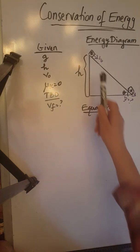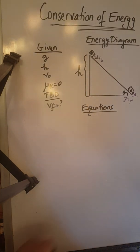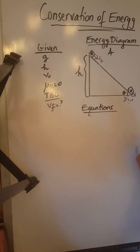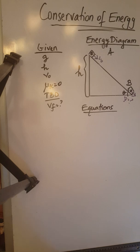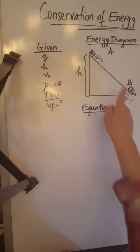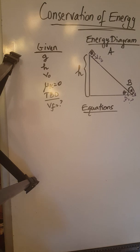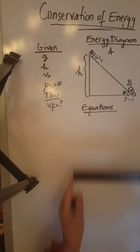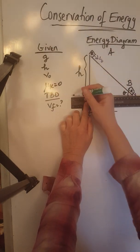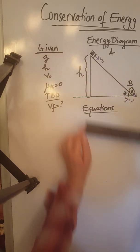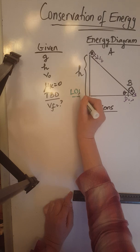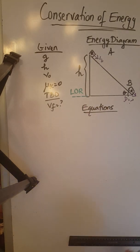The two points will be the top of the ramp — I'm going to call that point A — and the bottom of the ramp — I'm going to call that point B. Before we figure out what kind of energy we have at point A and at point B, we need to choose our level of reference and show it. For the level of reference, I'm going to choose the bottom of this ramp and indicate that this is my chosen level of reference.